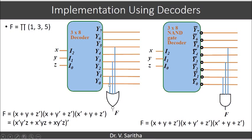If you see here 1, 3, 5, we are using 1, 3, and 5. Similarly here also 1, 3, 5. These given terms itself will be connected to the NOR gate and AND gate respectively.